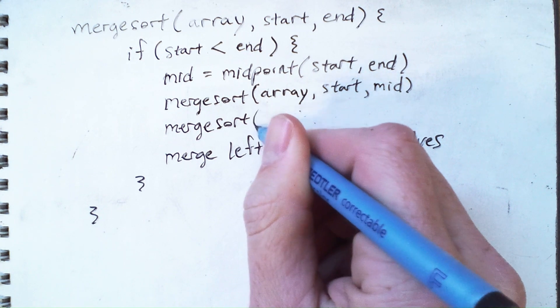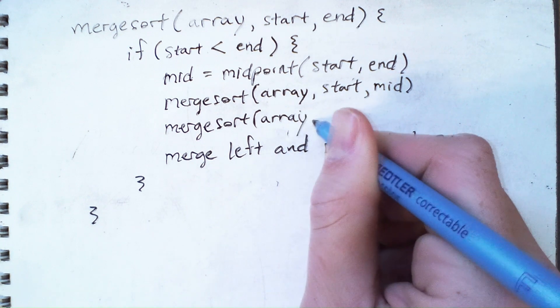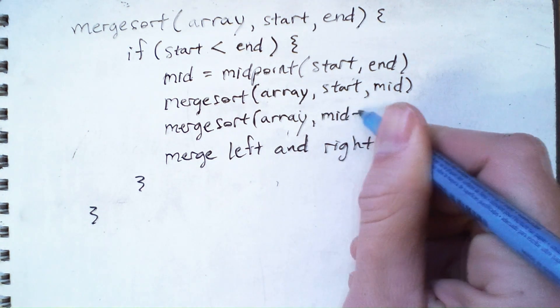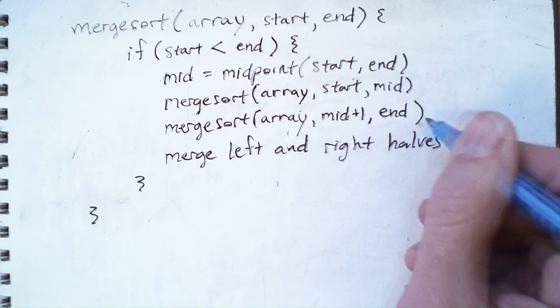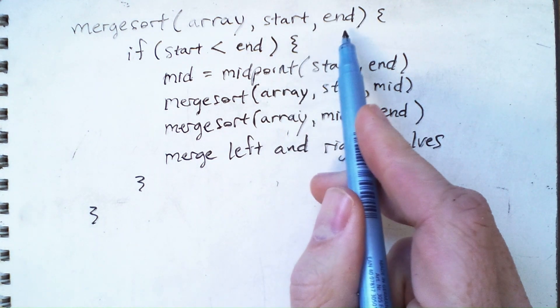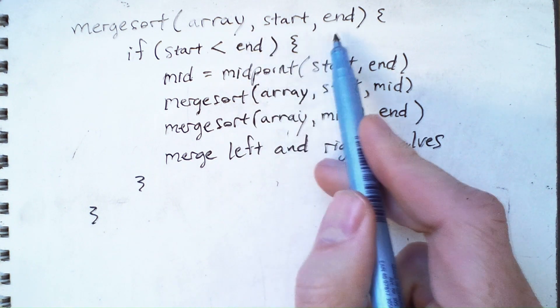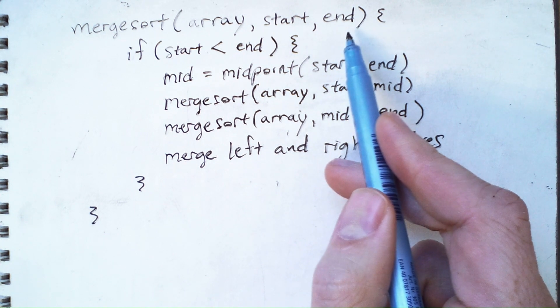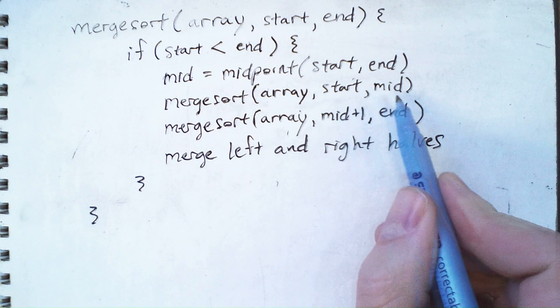So for the right half, I'm going to merge sort the array from mid plus one up to end. And so my convention here is that the indices start and end are inclusive. So when you initially call this merge sort, end would be the last index of the array, not the length of it.